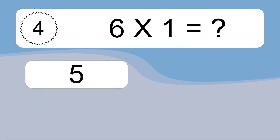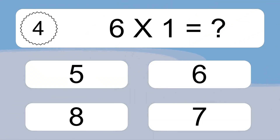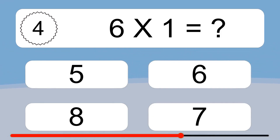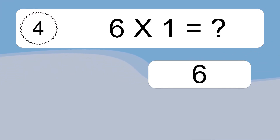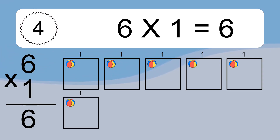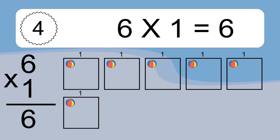6 times 1 equals what? 6 times 1 equals 6. We have 6 boxes, and each box has 1 colorful ball inside. If you count all the balls in all the boxes together, you will have 6 times 1 balls. This equals 6 balls.